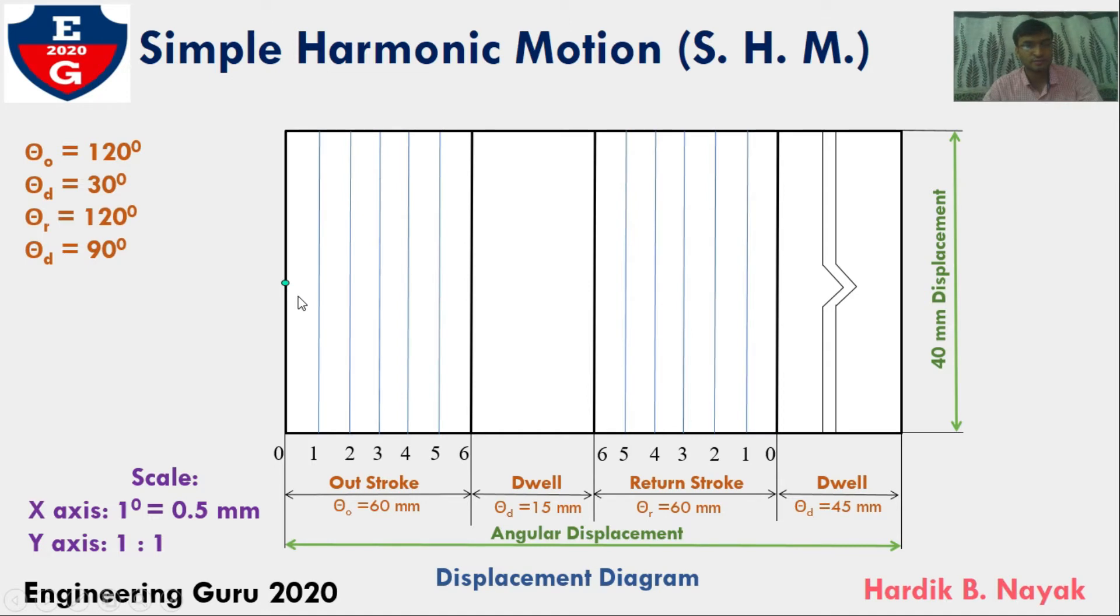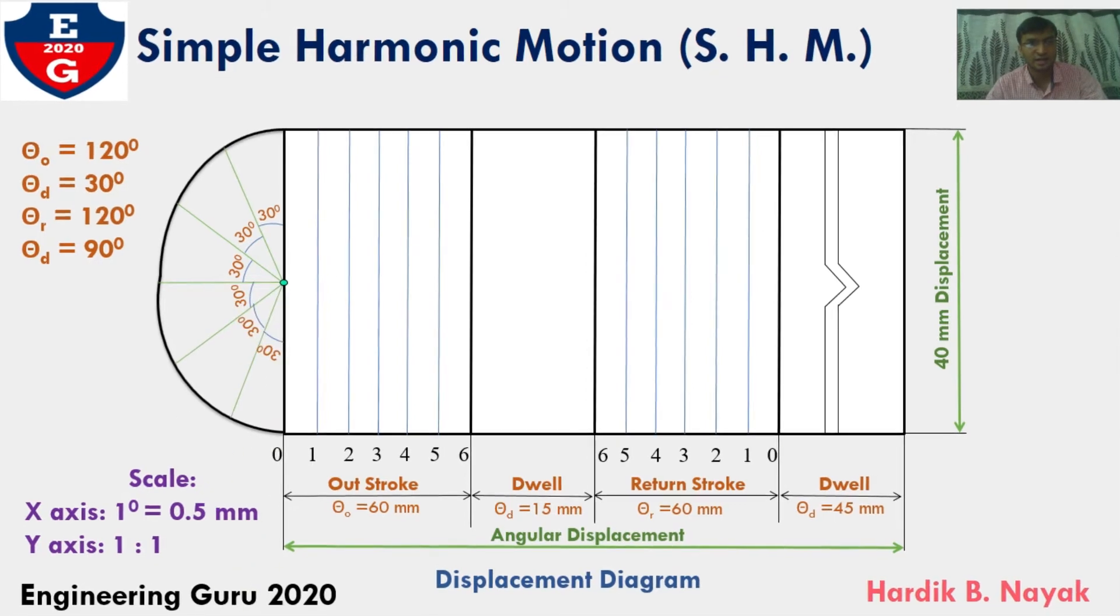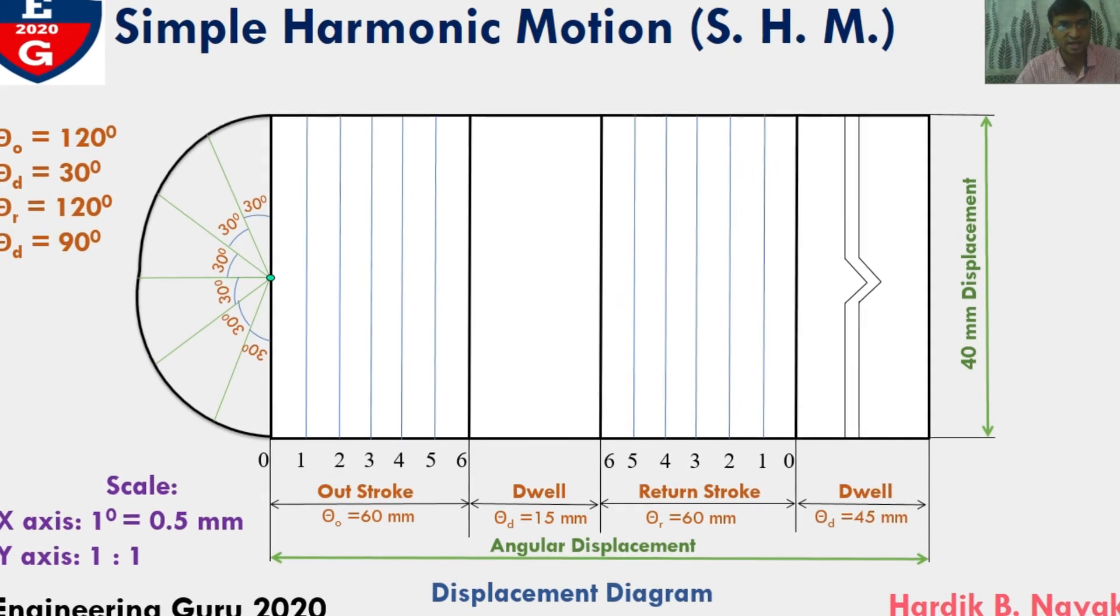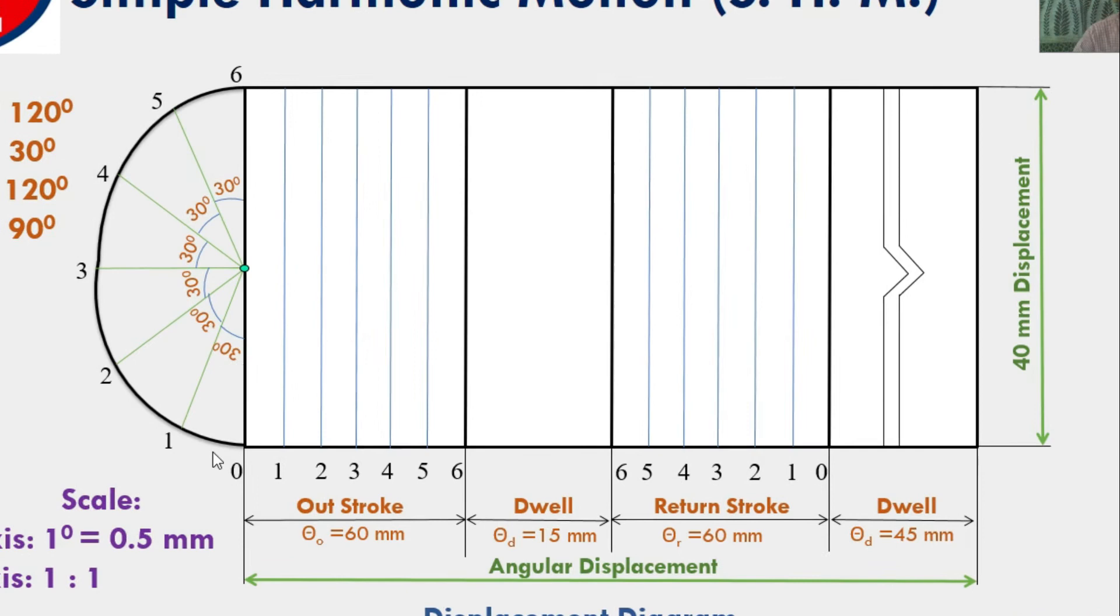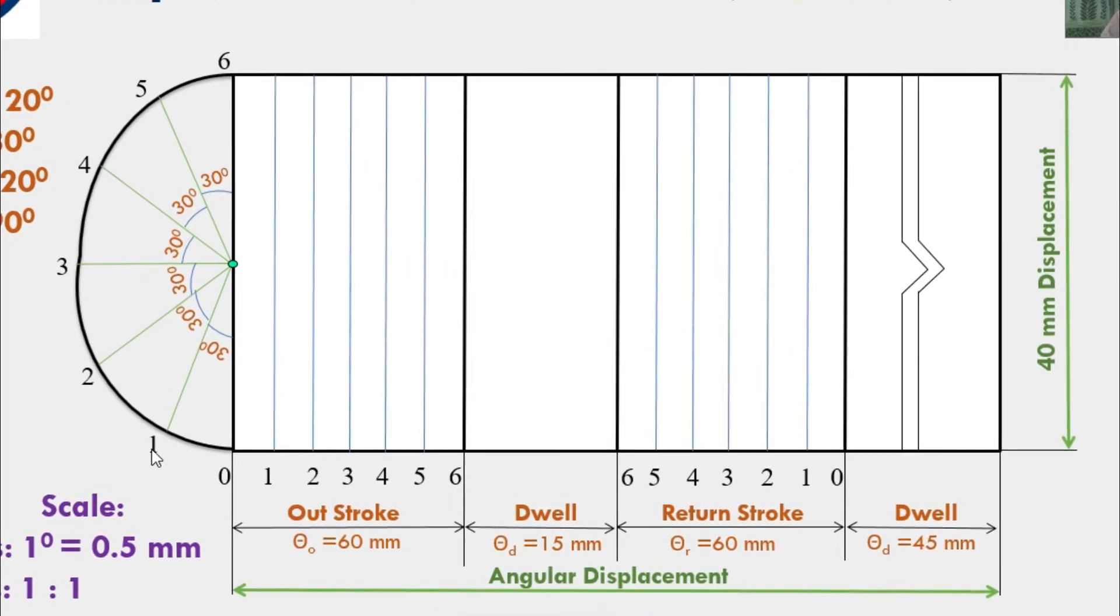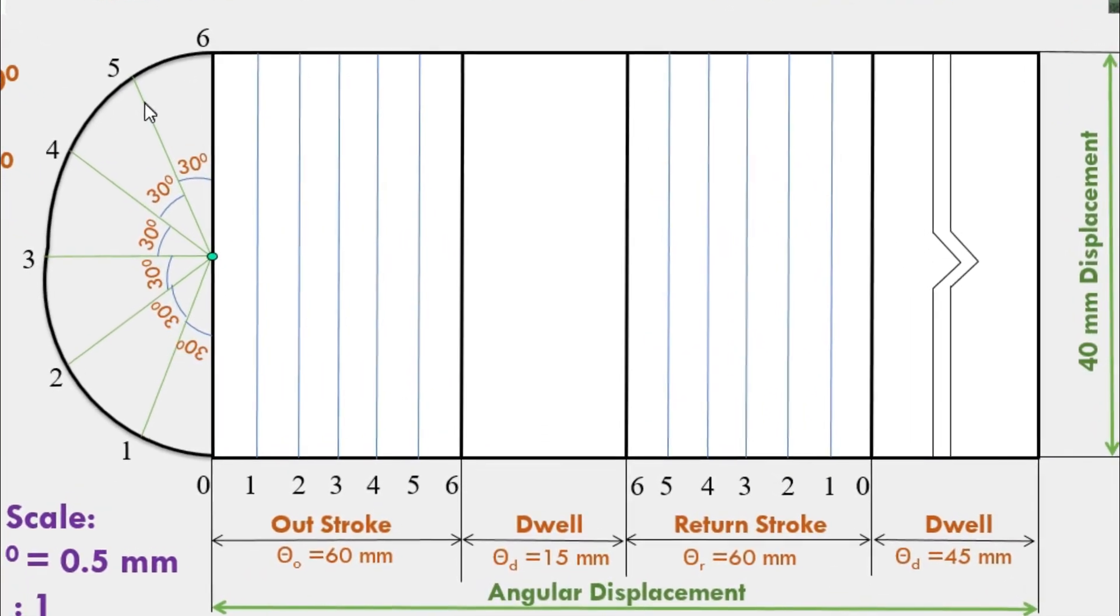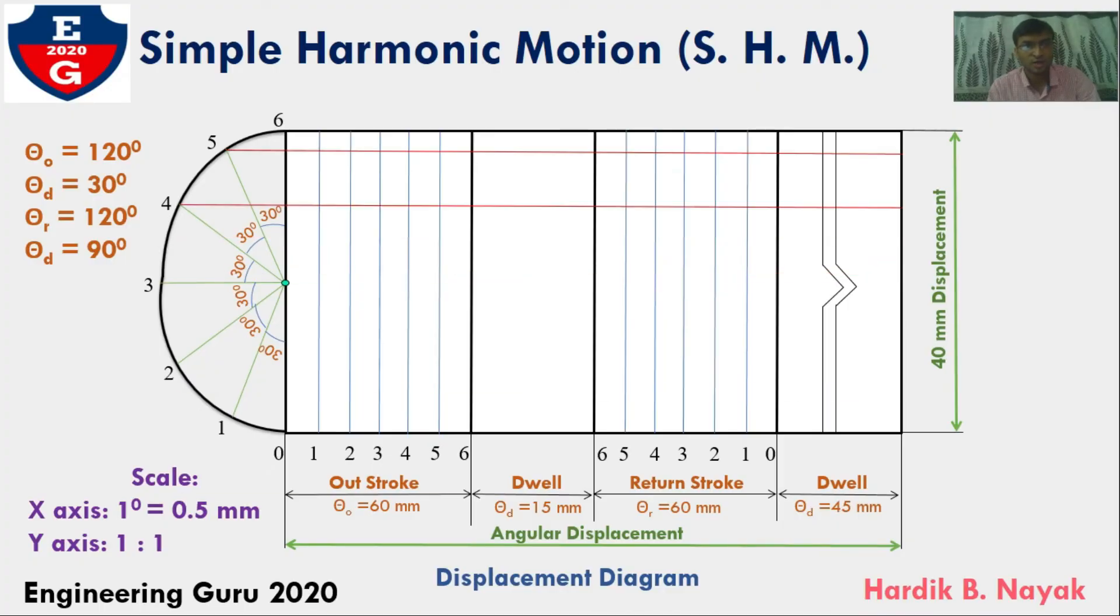First, mark the midpoint which is at 20 mm. From here, I will draw one semi-circle. Then, divide this semi-circle into 6 equal parts with light lines, taking each angle by 30 degrees, giving notation 0, 1, 2, 3, 4, 5, and 6. Then draw light horizontal lines through all points.